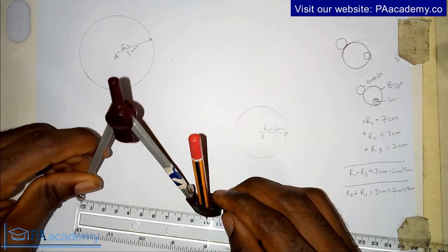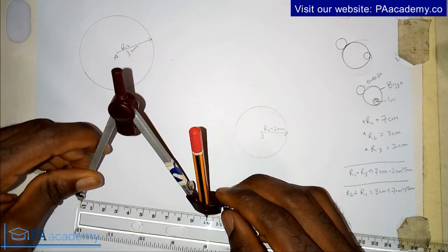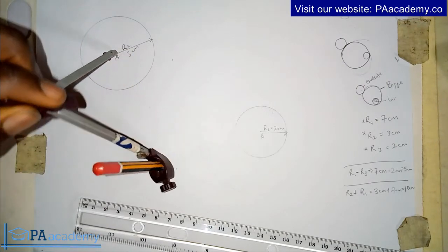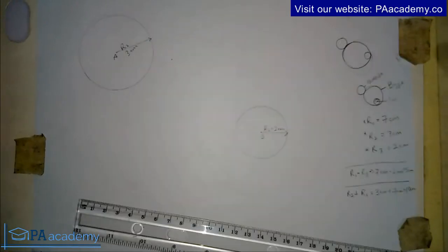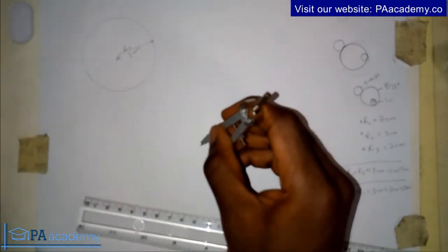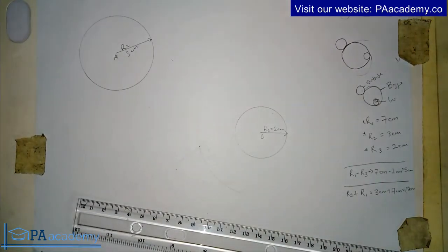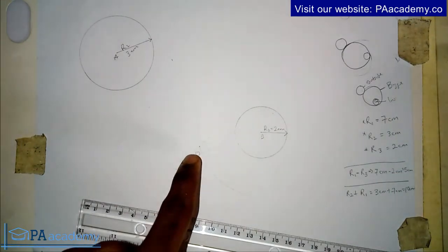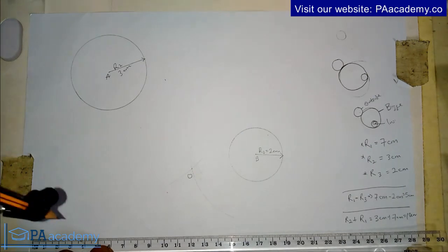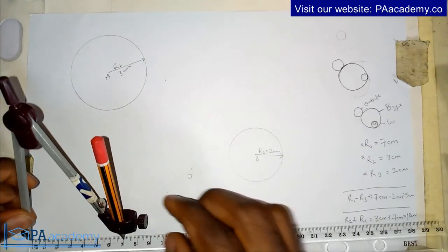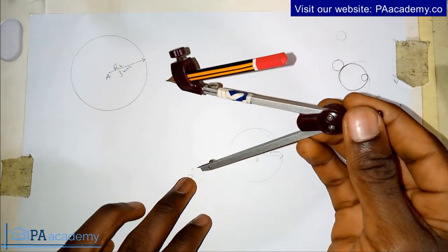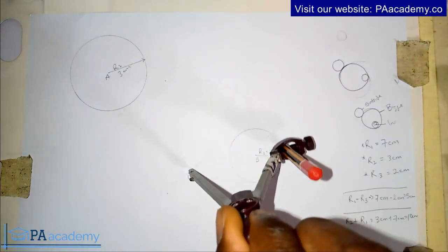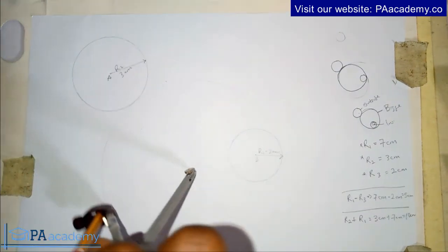I already have my ten centimeters. From point A, I draw an arc to cut the first arc. The point of intersection represents the center of the circle we are going to draw. Let me call that point O. Now I pick my compass, measure seven centimeters, place it on point O where the two arcs intersect, and draw the circle.